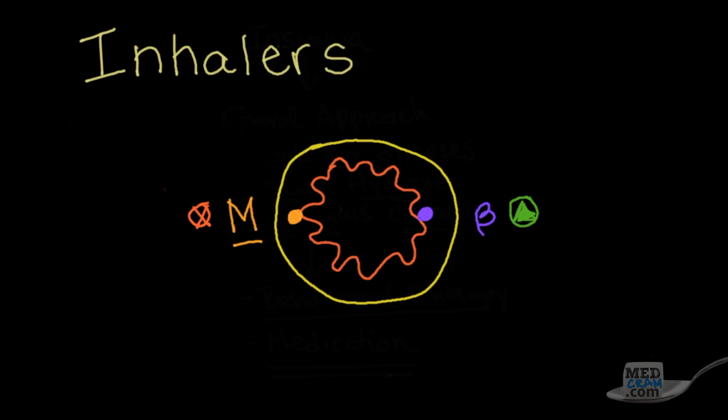Now the only other one that you should know is the inhaled corticosteroid, which we'll say here is ICS, and that basically goes everywhere. There is no real receptor but what it does is it reduces inflammation. So the three types of drugs that you can use for bronchi are muscarinic antagonists, beta agonists, and inhaled corticosteroids.